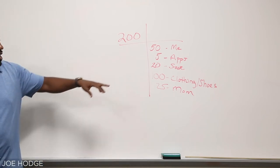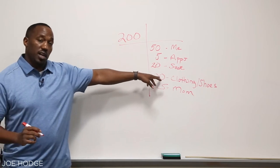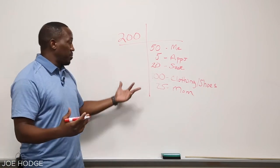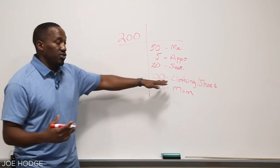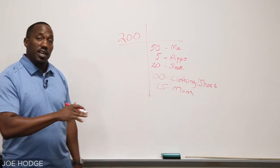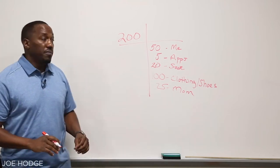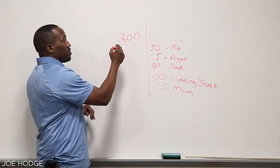So what we have done now, we've got the $50 plus the $5 is $55. We have $20 that we're just going to save. That's going to bring us to $75. $100 that we've budgeted for clothes brings us to $175. And now, we have the $25 that we're going to give away to mom, which brings us to the total of $200.